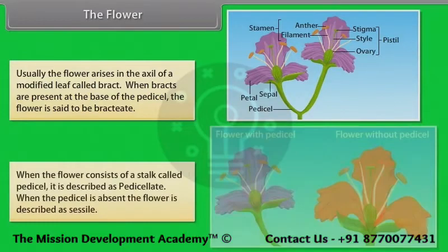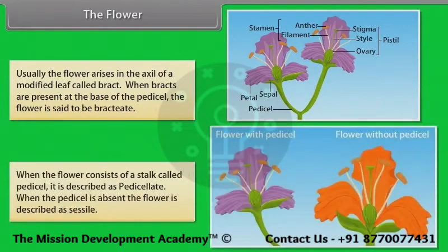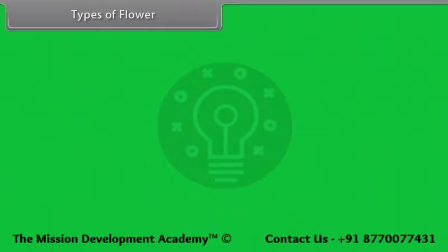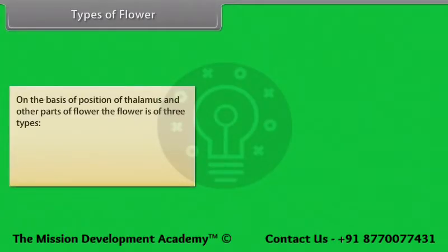When bracts are present at the base of the peduncle, the flower is said to be bracteate. When the flower consists of a stalk called a pedicel, it is described as pedicellate. When the pedicel is absent, the flower is described as sessile. On the basis of position of thalamus and other parts of the flower, the flower is of three types.